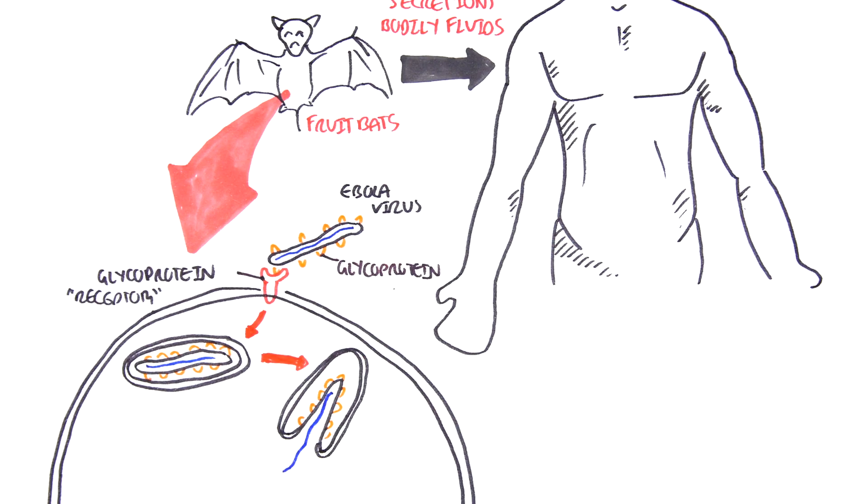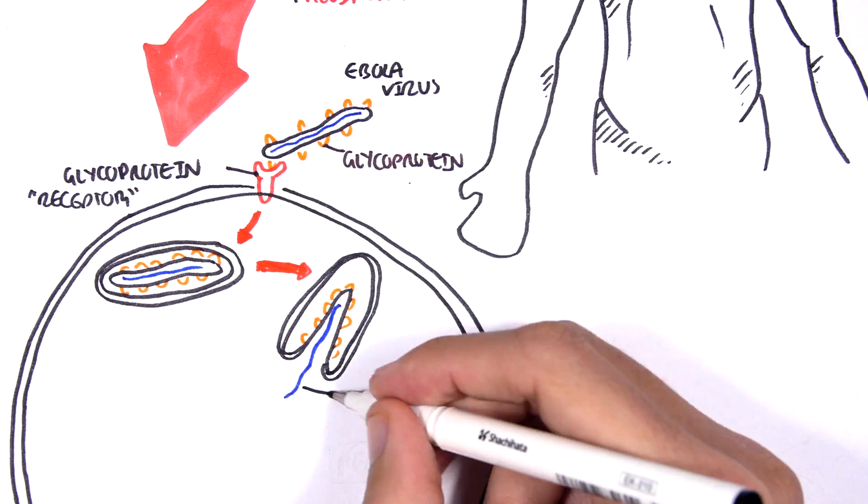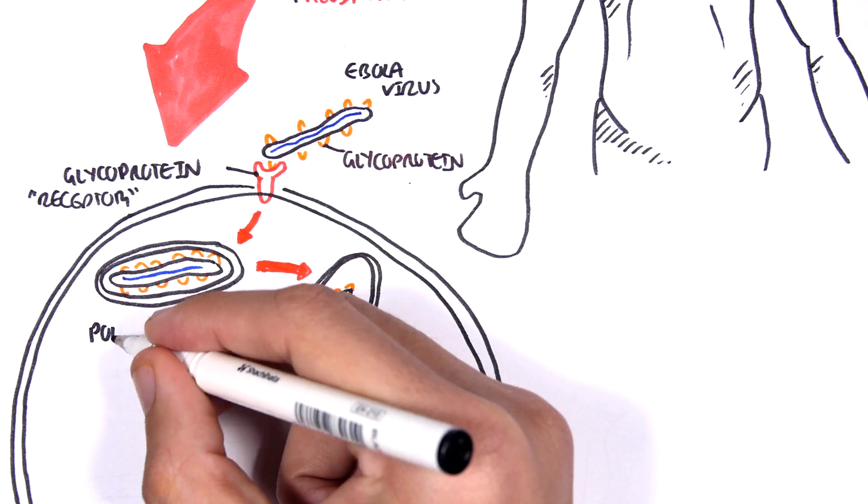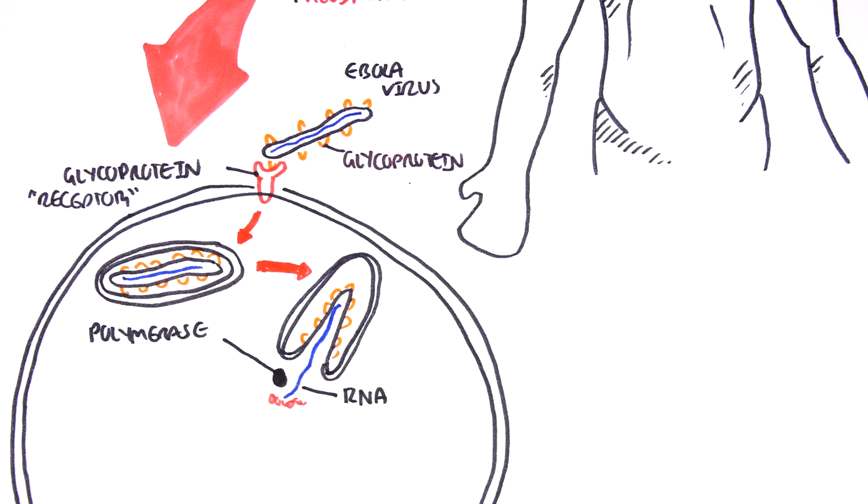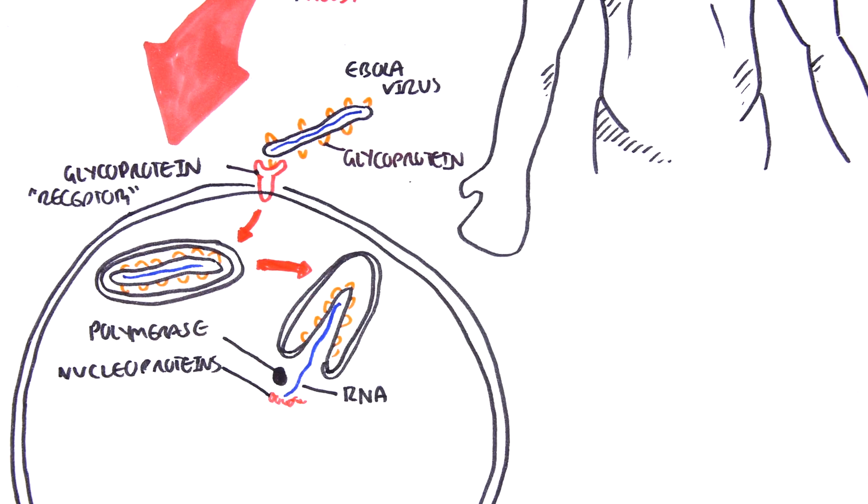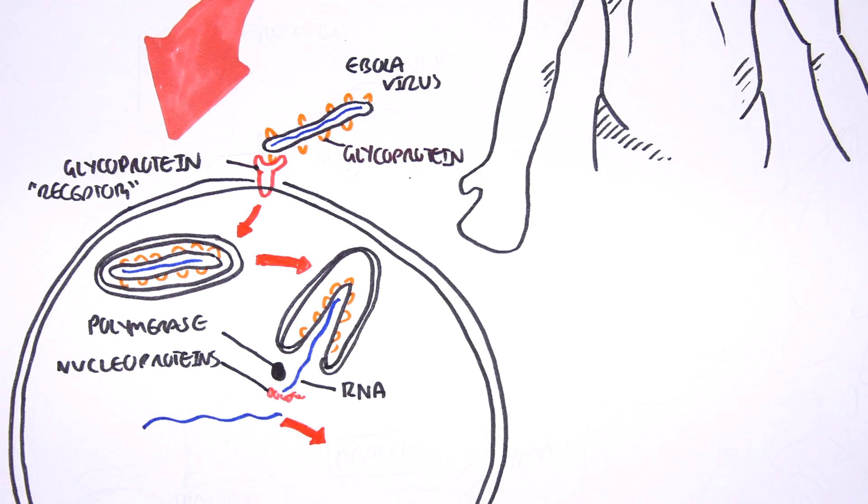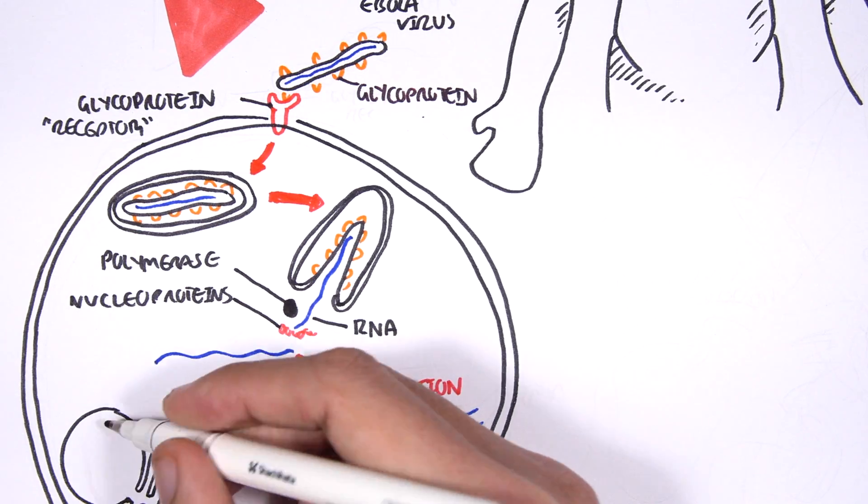The genetic material, the nuclear proteins, and the polymerase are released. The genetic material will be replicated, and it will also undergo processes called transcription and translation, which will create other structures that the virus requires.